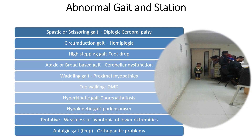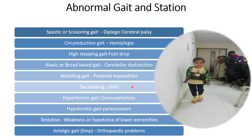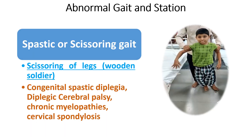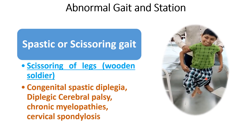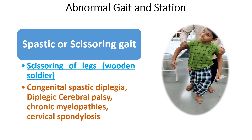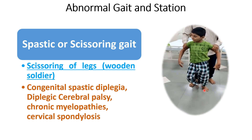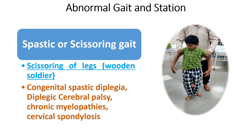Now I am going to show some abnormal gaits. The first abnormal gait is the spastic or scissoring gait. The child has scissoring of the legs, hence called scissoring gait, with wooden shoulders. It is seen in congenital spastic diplegia, diplegic CP, chronic myelopathy, and cervical spondylosis. The child has slow walking with support, bilateral hip and knee joints adducted and partially flexed, dragging the feet due to stiff legs, and walking on toes due to equinus position and heel cord shortening.